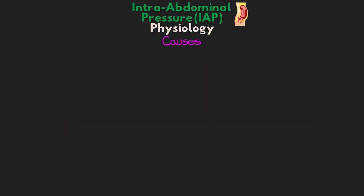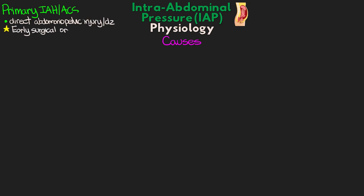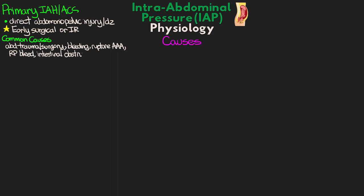Now let's discuss some of the causes of elevated intra-abdominal pressure. We can classify IAH or ACS into two groups. First, we have primary IAH or ACS, caused by direct abdominal or pelvic injury or disease. These causes frequently require early surgical or IR intervention. Common causes of primary IAH include abdominal trauma and surgery, bleeding, ruptured AAAs, retroperitoneal bleeds, and intestinal obstruction. Bleeding can actually lead to pretty rapid increases in intra-abdominal pressure.